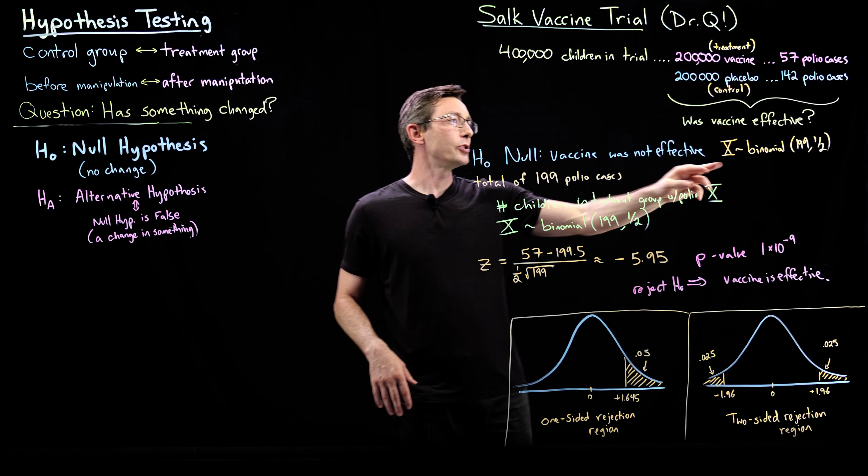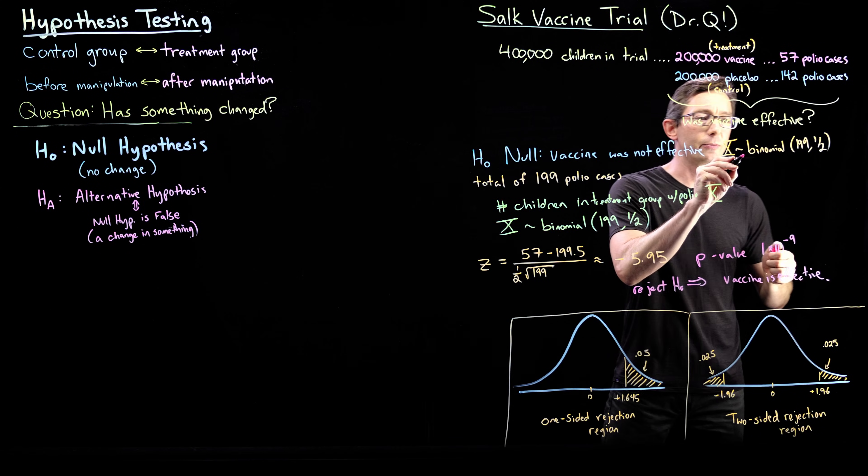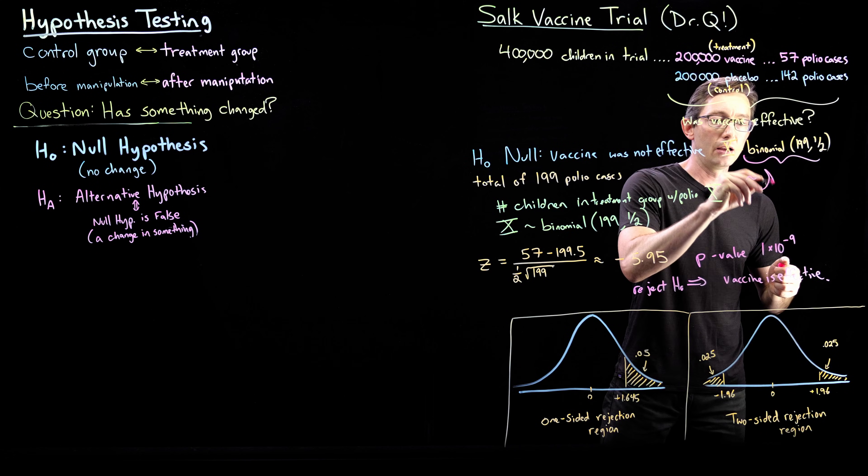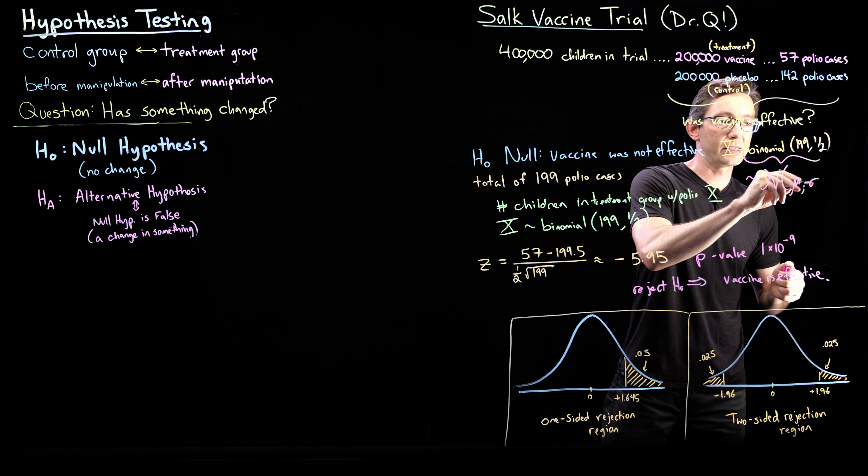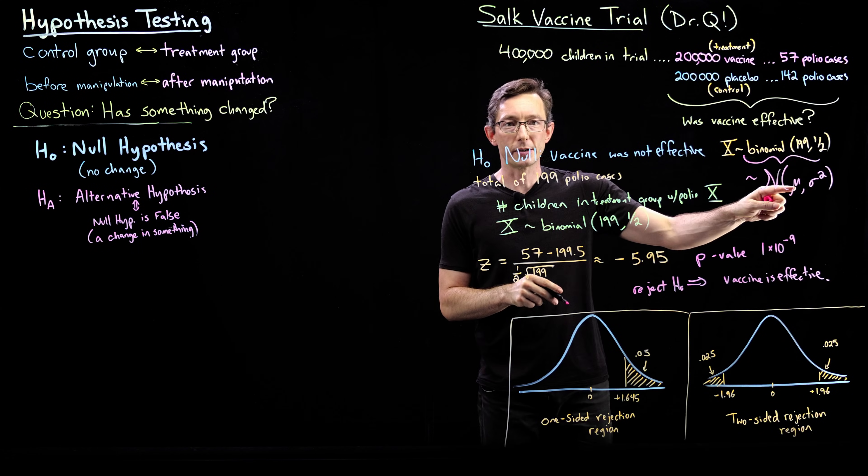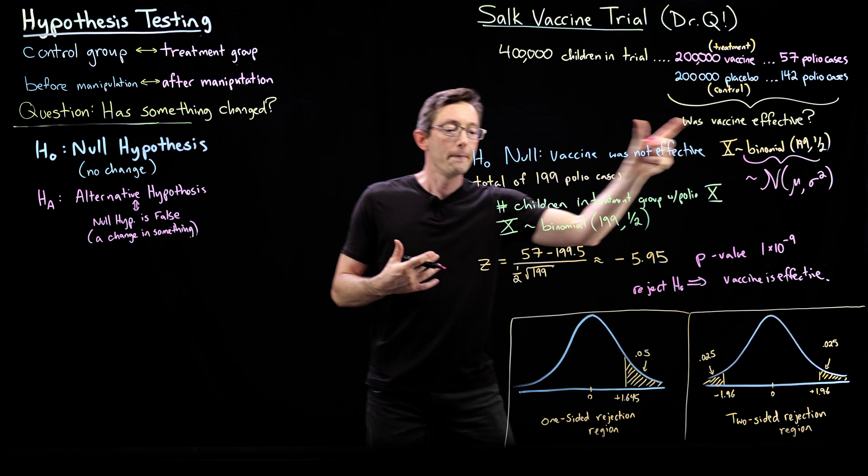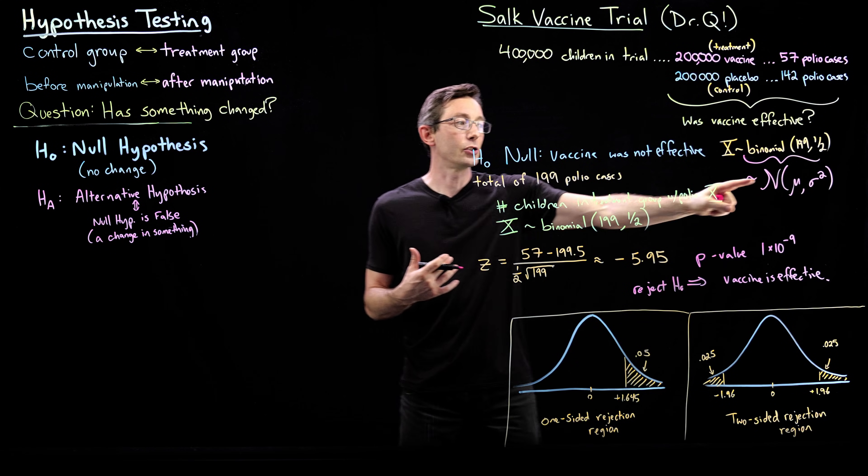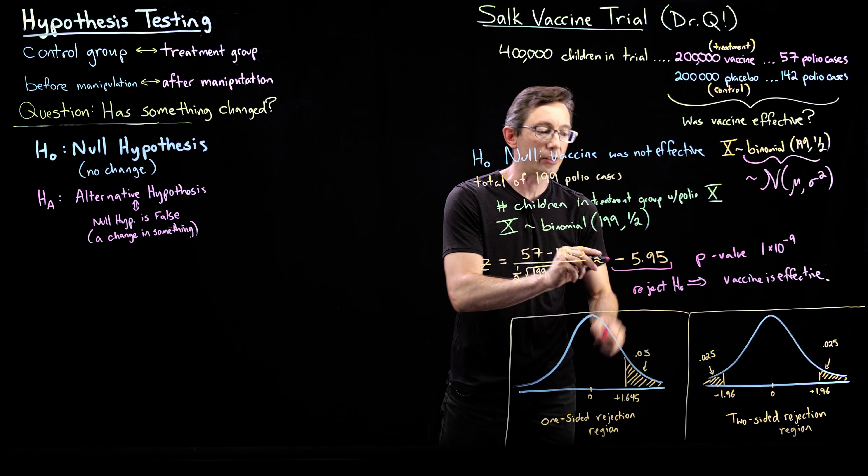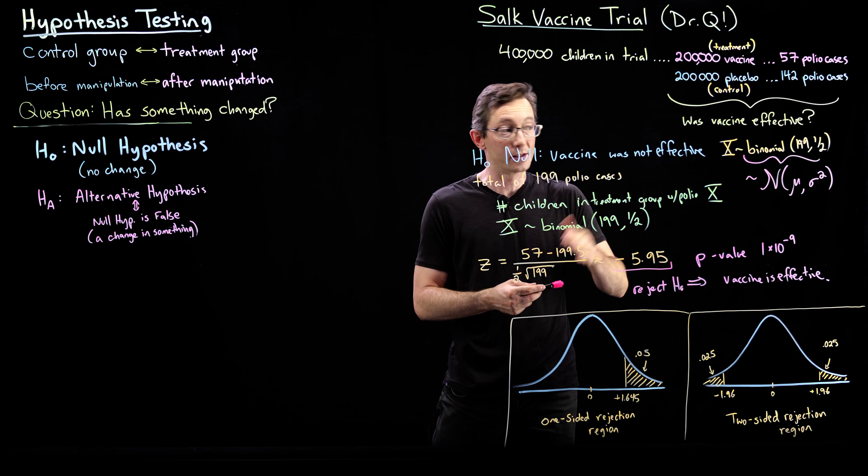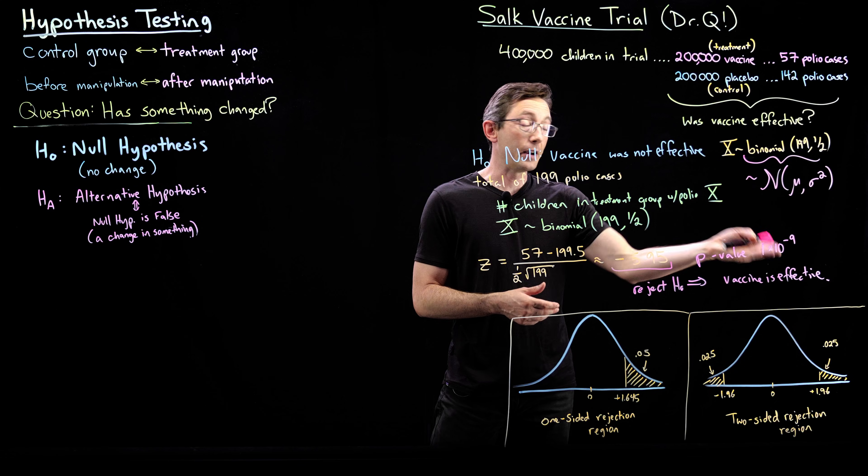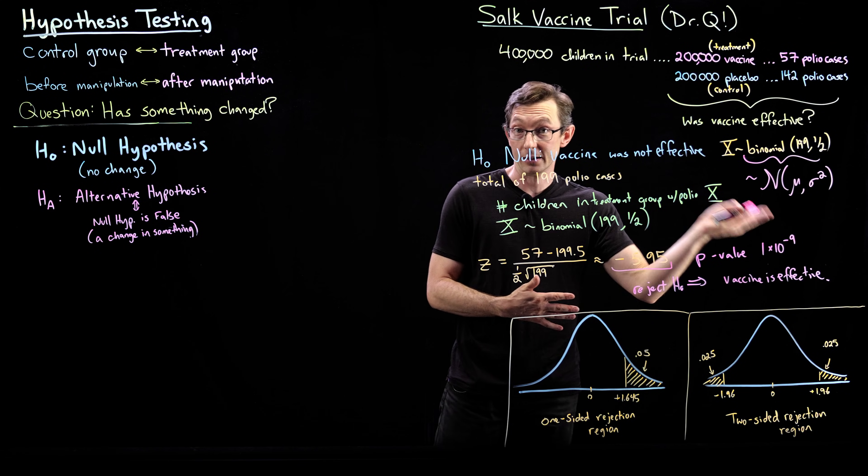I would encourage you, write down the normal distribution. This is approximately normal with some mean and some standard deviation. The mean, of course, is going to be 99.5. Standard deviation, there's a formula for that. And then compute this test statistic assuming normal and convince yourself that this actually is the number of standard errors away from expected. Very, very strongly significant result.